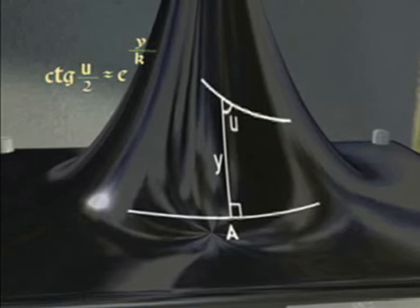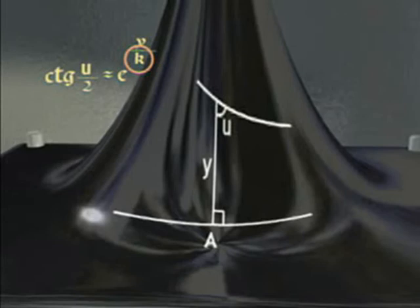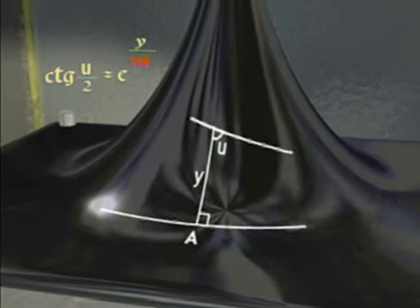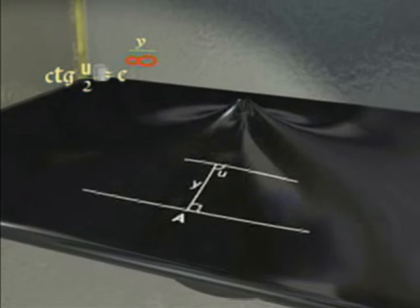Itt bevezet ezt a híres K paramétert, és akkor, hogyha ennek a K-nak különböző értékeket adunk, akkor annyi geometria van, ahány értéket adunk neki. De az Euklideszi pont akkor jön elő, mikor a K végtelen felé tart.